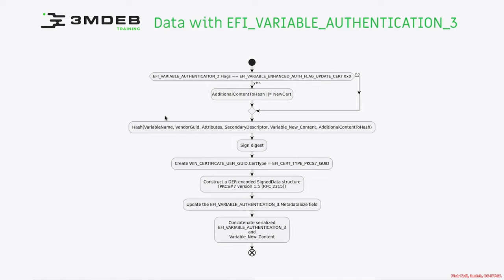For producing the hash for further signing, we provide — as in the case of authenticated two — the variable name, vendor GUID, attributes, our secondary descriptor (which depends on the type: either timestamp or nonce), the new variable content, and whatever additional content to hash we have based on the flags or based on the type of the descriptor.